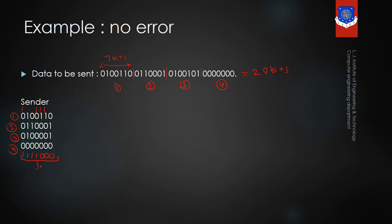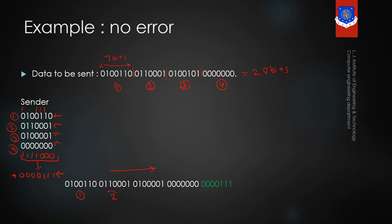In the third step, the sender will perform one's complement to the answer of the binary addition. After performing the one's complement, you will get 0, 0, 0, 0, 1, 1, 1. So right now the sender has four data segments and one checksum segment. The sender will send these four data segments along with the checksum segment to the receiver — segments one, two, three, and four along with the checksum segment.